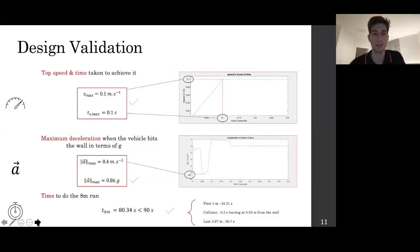The design validation of our vehicle firstly relies on its top speed and the time needed to reach it. Using the most accurate MATLAB model, we found out that the top speed is expected as 0.1 meters per second and reached in a tenth of a second.